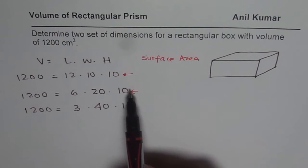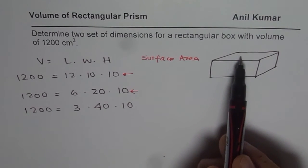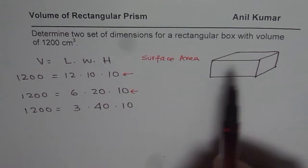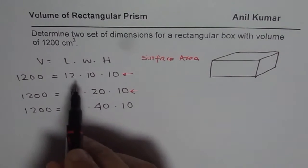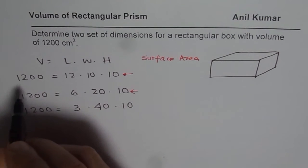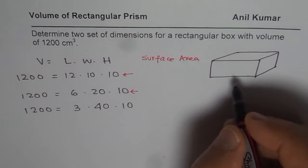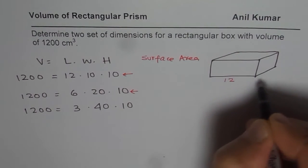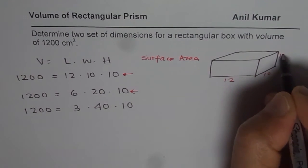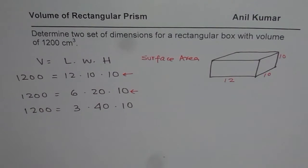Surface area, as you know, is twice the surface area of top, front and side. So you can do that. Let us do for one of the dimensions, let us take the first one, 1200 as 12, that is 10 and this is 10. In that case, to find the surface area, what are you going to do?